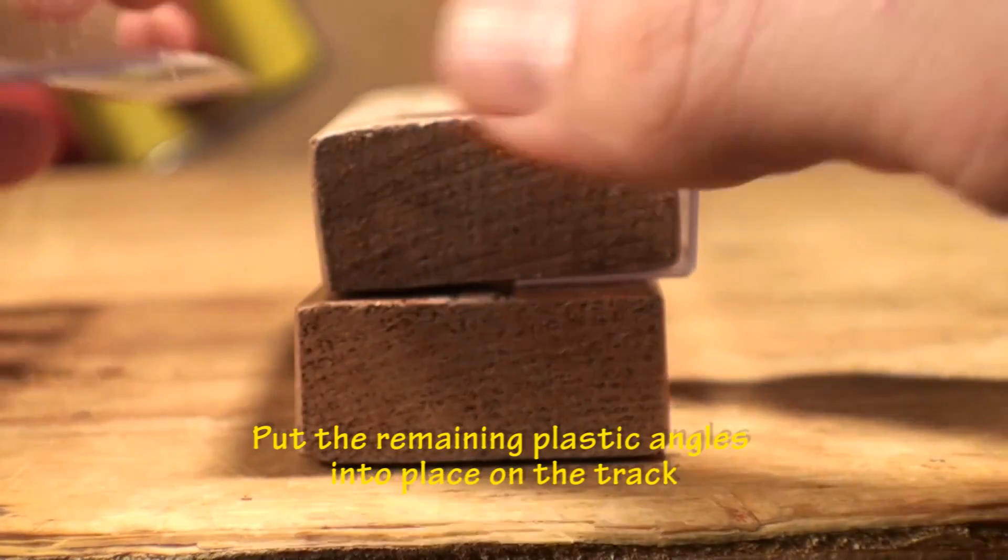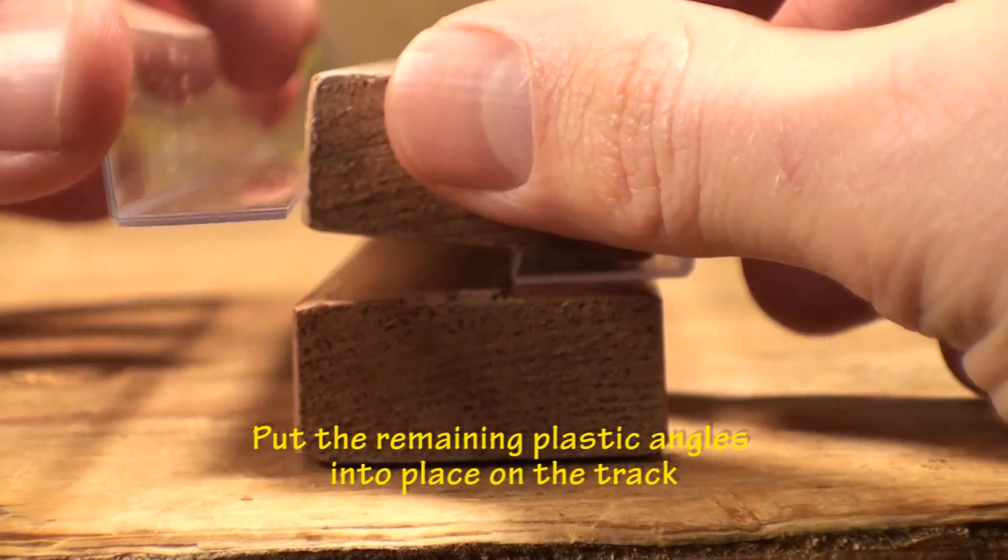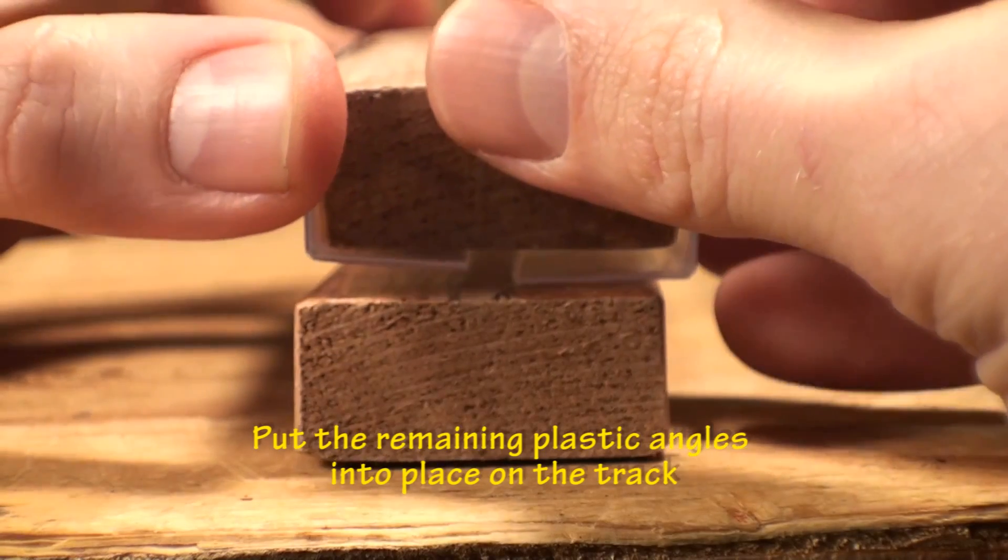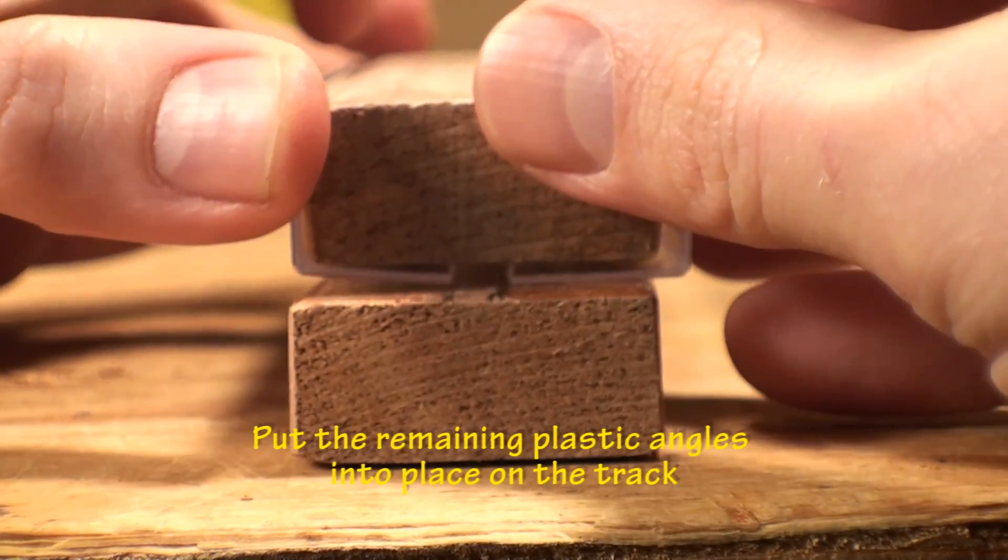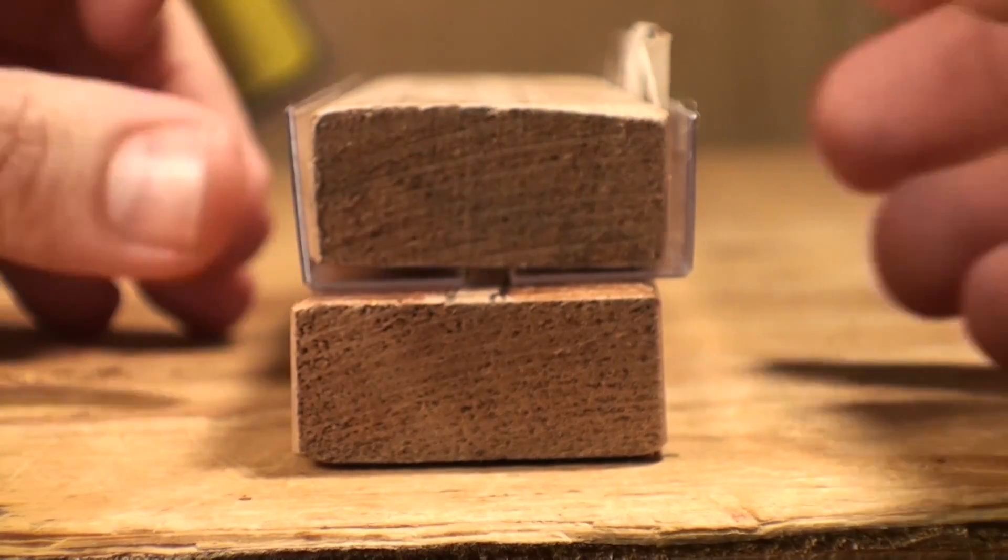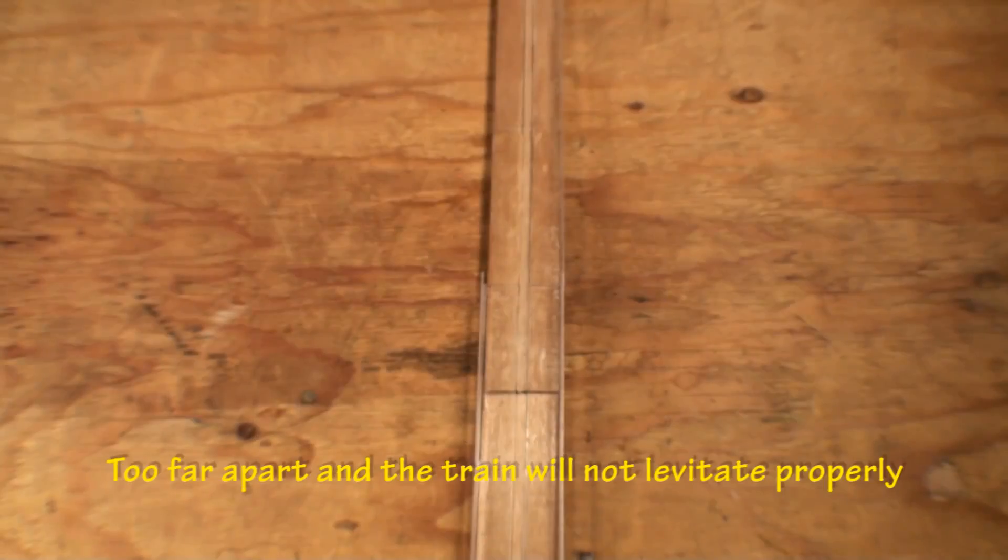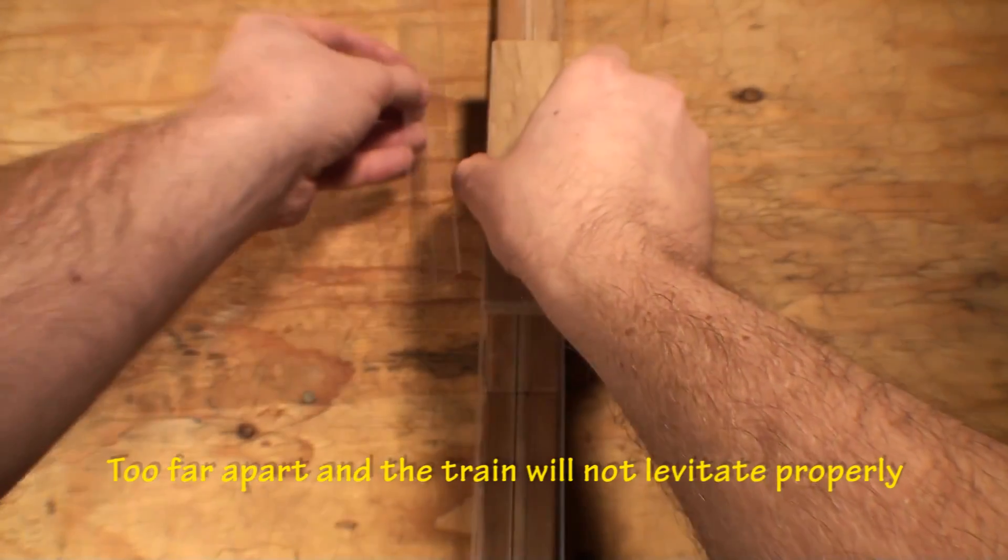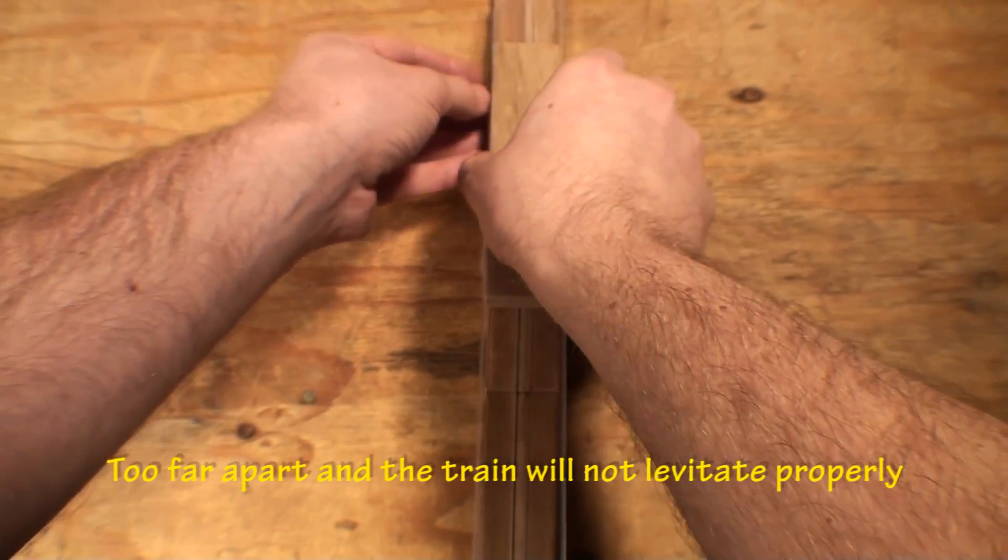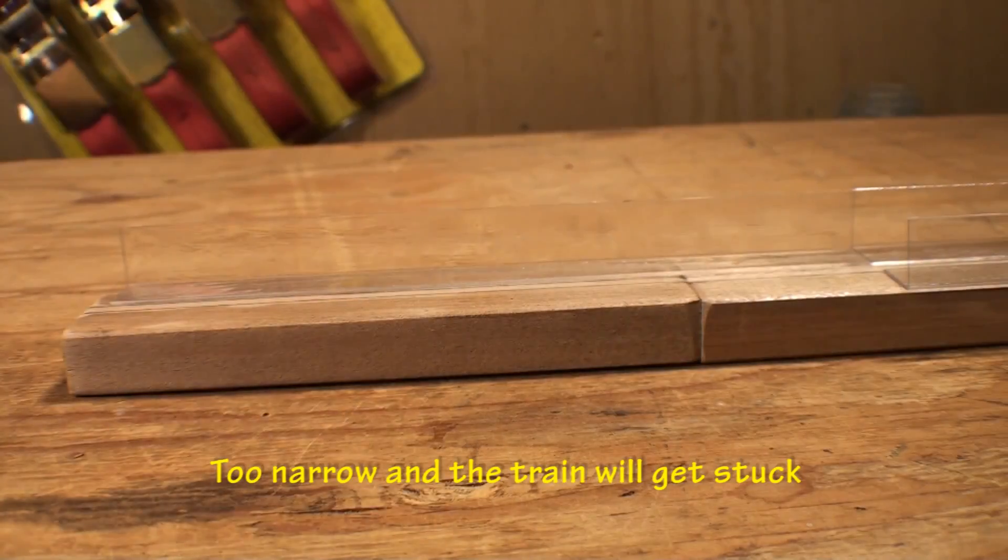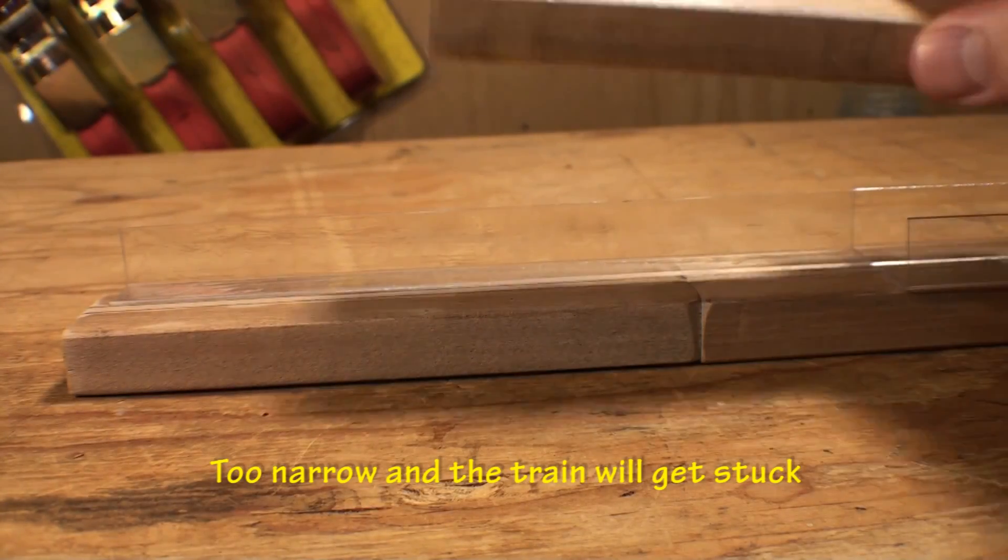Now place the other plastic angle into place. Take your time with this step and carefully make sure there is enough space between the plastic angles. If the plastic angles are too far apart, the train will have too much space and will not levitate properly. If it is too narrow, the train will get stuck.